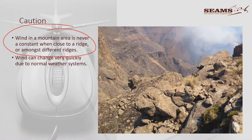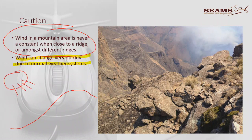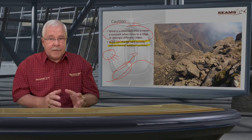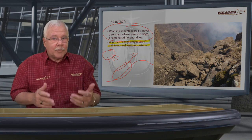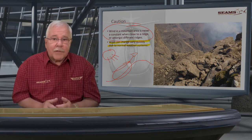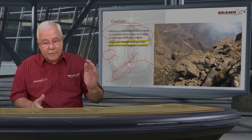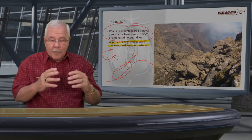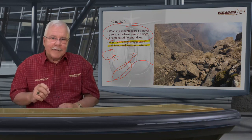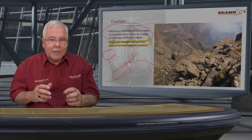Wind can change very quickly due to normal weather systems. Let's say this is the side of the mountain going up, here's the top, and the sun is shining on this side. This area will heat up and the air will start rising — that's how it is. If you understand the physics, you can actually climb a mountain using solar-driven thermals. But if there's a serious downdraft and a thermal trying to rise at the same time, no single factor will stand on its own — take the whole picture into consideration.